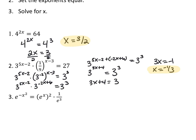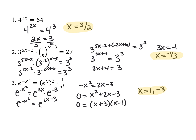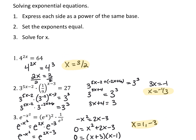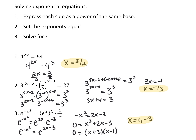Try e to the negative x squared equals e to the x quantity squared times 1 over e cubed. I have a power raised to a power, so I multiply to get e to the 2x. And 1 over e cubed is the same as e to the negative 3. Multiplying two things with the same base means I add the exponents, giving e to the 2x minus 3. Setting exponents equal gives a quadratic — I set it equal to 0, factor it, and get x equals 1 and x equals negative 3. Since there are no domain issues with exponential functions, no extraneous solution check is needed.